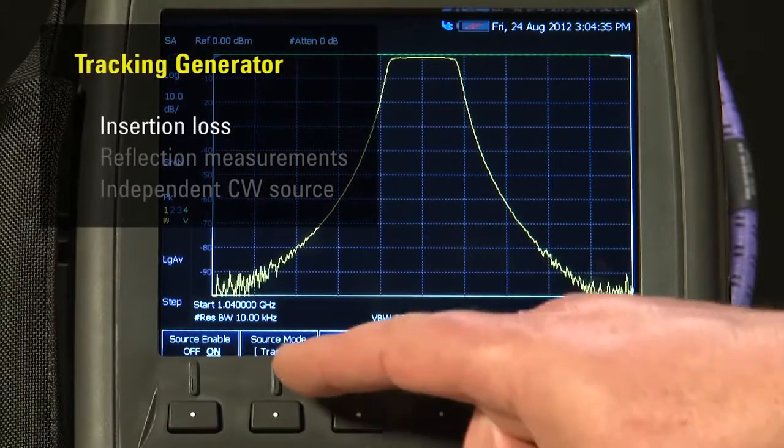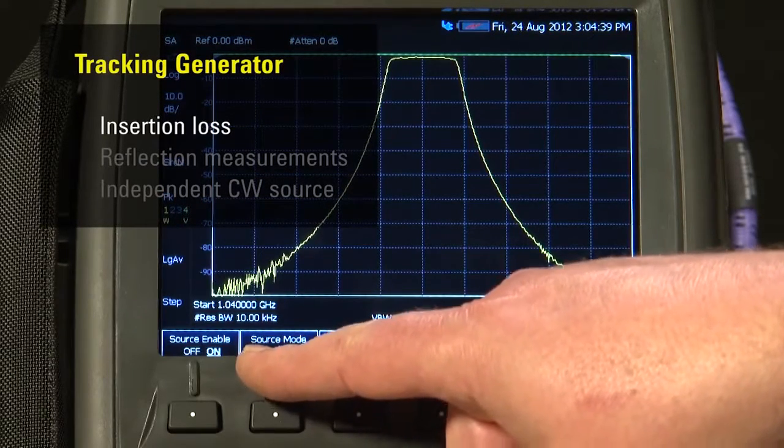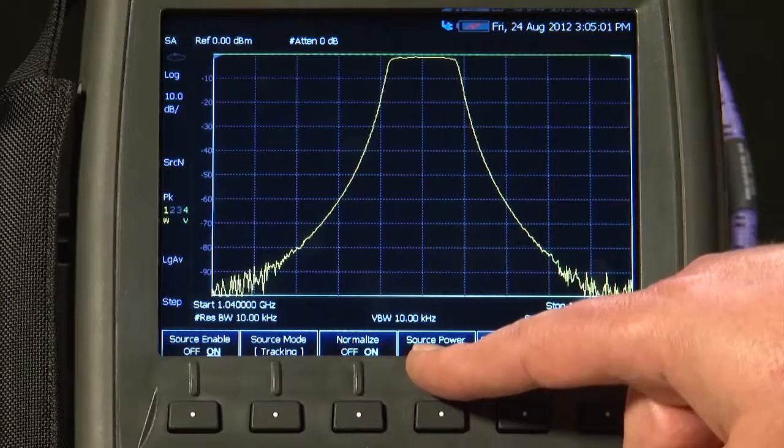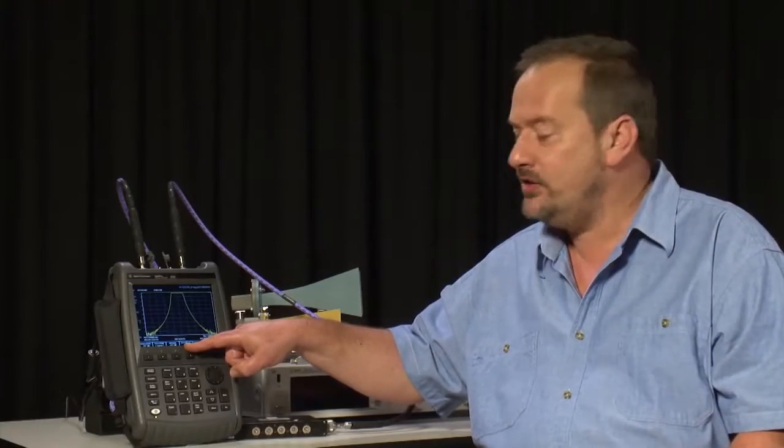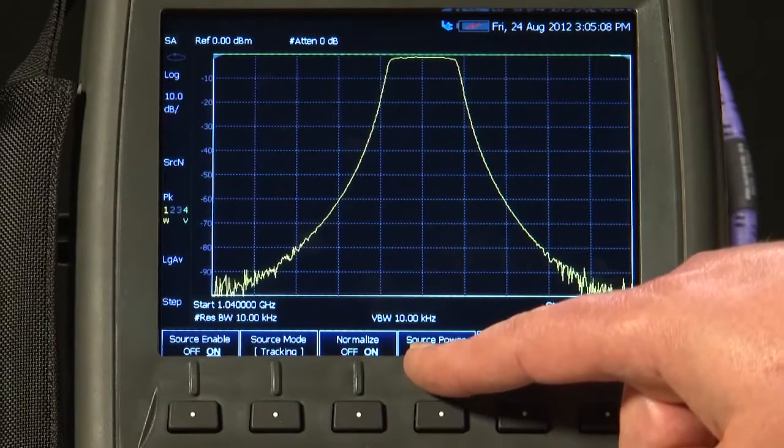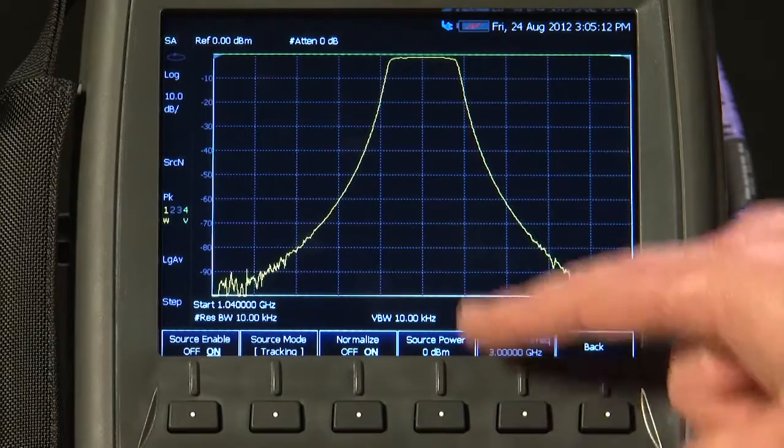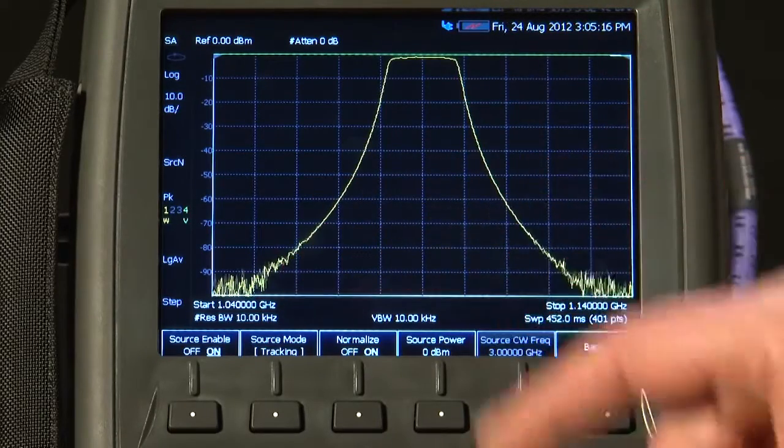We have turned on the generator by pressing the Source Enable button and setting that to On. We have set the Source mode to Tracking, normalized the trace by sweeping a straight through adapter first, and it is now performing a simple Trace 4 minus Trace 1 normalization. We have got the source power set to 0 dBm, and we can see down the skirts of the filter quite happily down to about minus 90 dB.